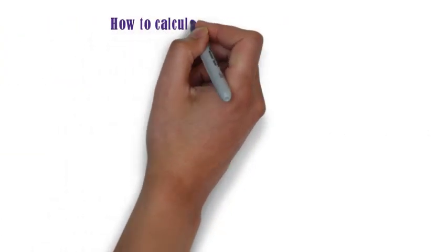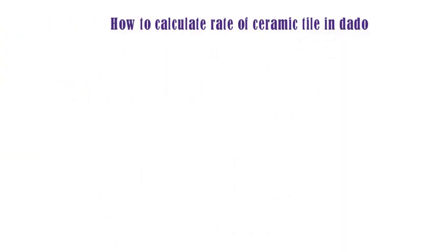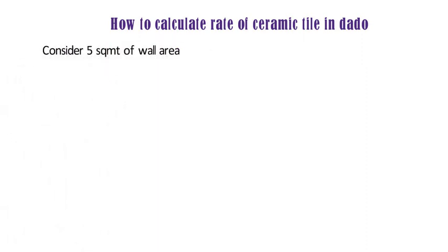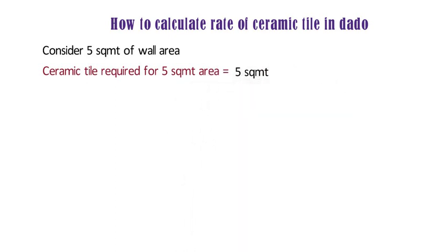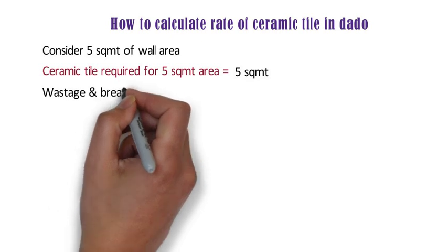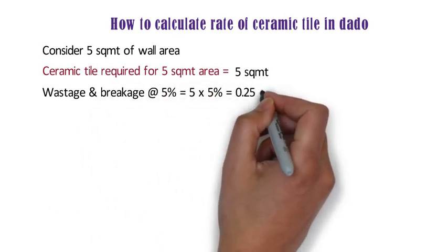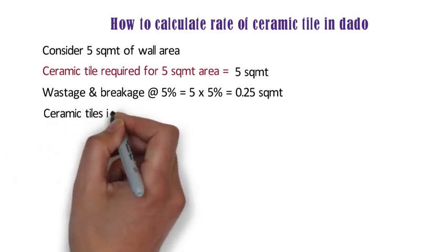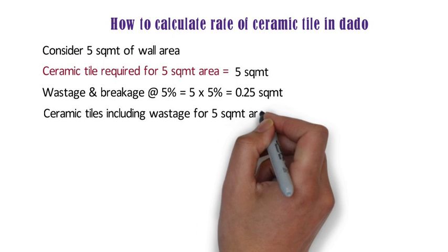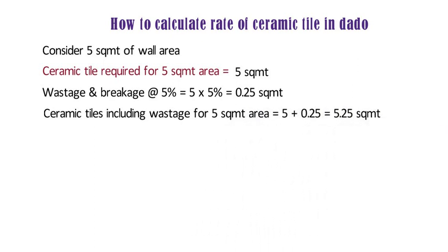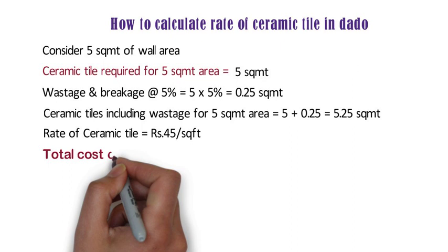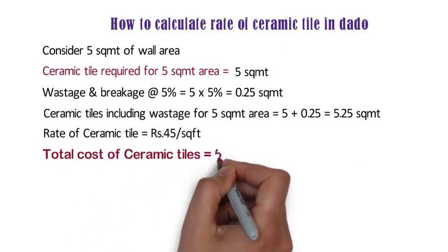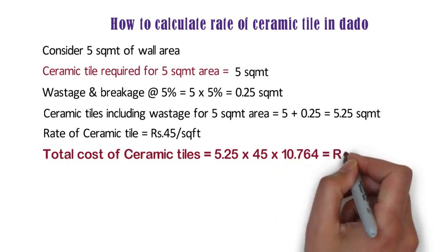Now let us understand how to calculate the rate of ceramic tile in dado. For analysis purposes, we will consider 5 square meters of wall area. Ceramic tiles required for 5 square meters is equal to 5 square meters. The wastage and breakage factor is 5%, so 5 x 5% equals 0.25 square meters. Ceramic tiles including wastage equals 5 plus 0.25 = 5.25 square meters. Considering the rate of ceramic tile at 45 rupees per square feet, total cost of ceramic tile shall be 5.25 x 45 x 10.764 = 2,543 rupees.